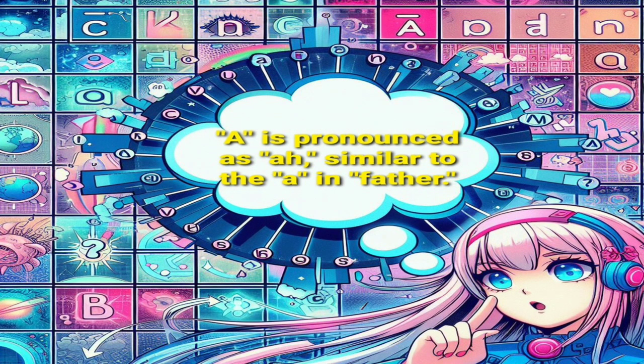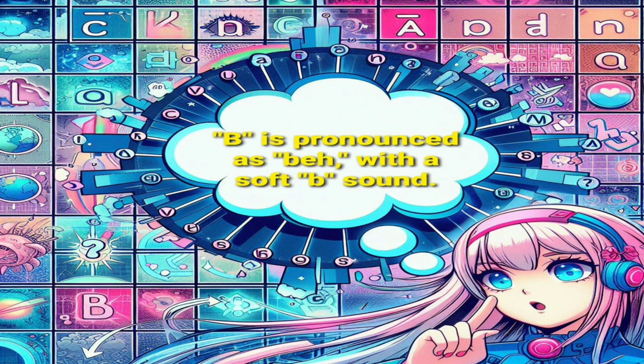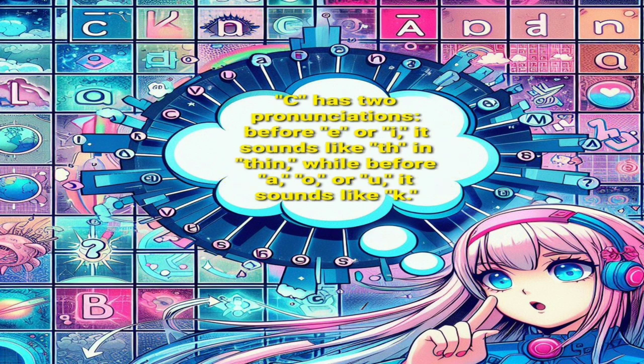A is pronounced as 'ah', similar to the a in father. B is pronounced as 'bay', with a soft b sound. C has two pronunciations: before e or i, it sounds like th in thin, while before a, o, or u, it sounds like k.